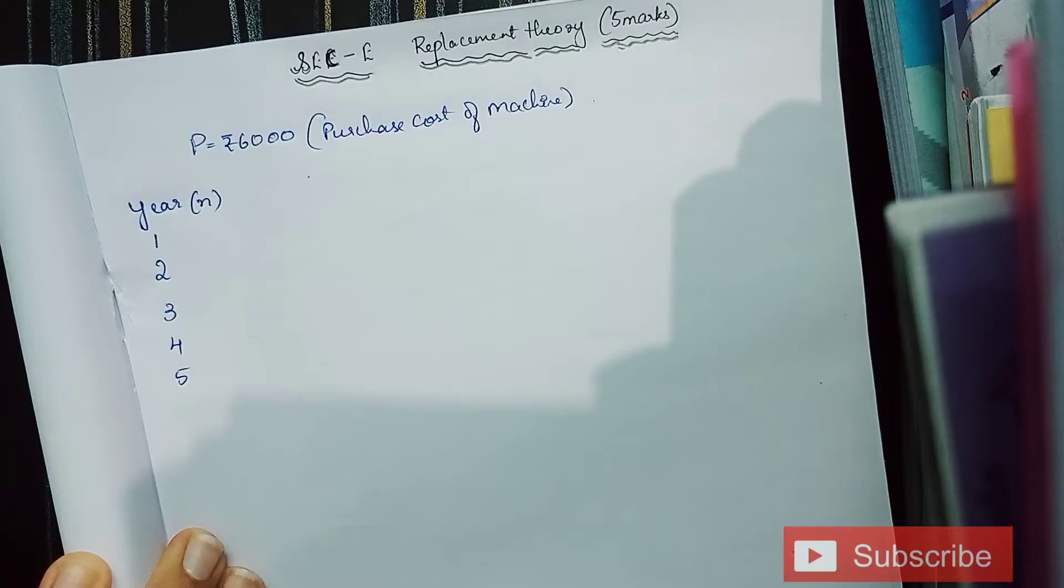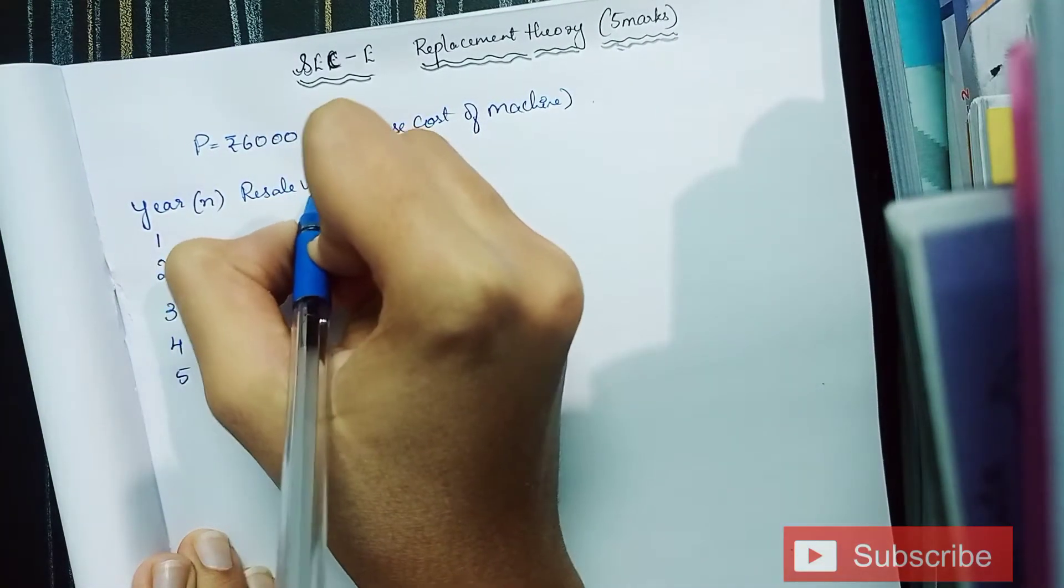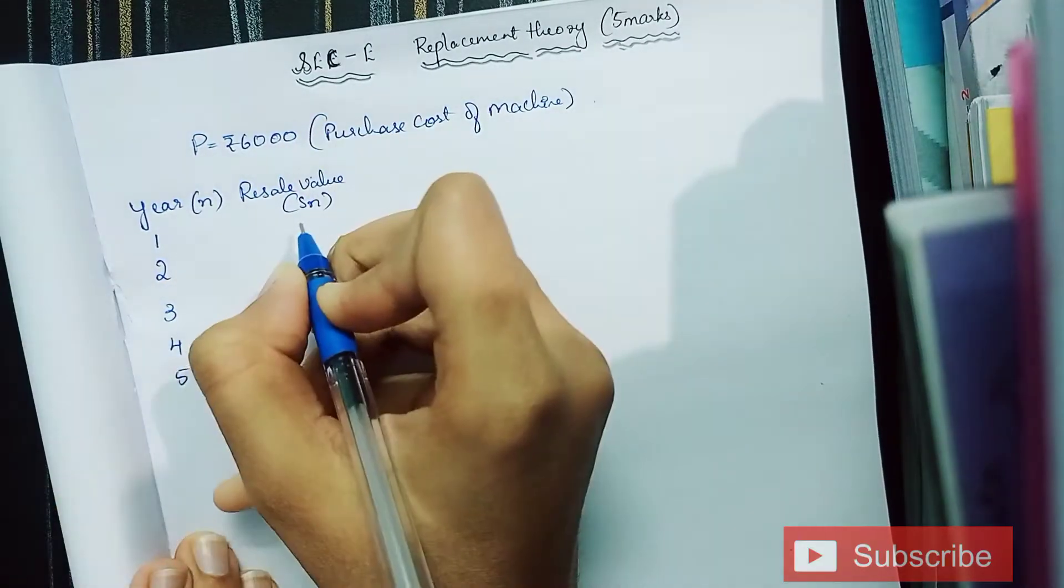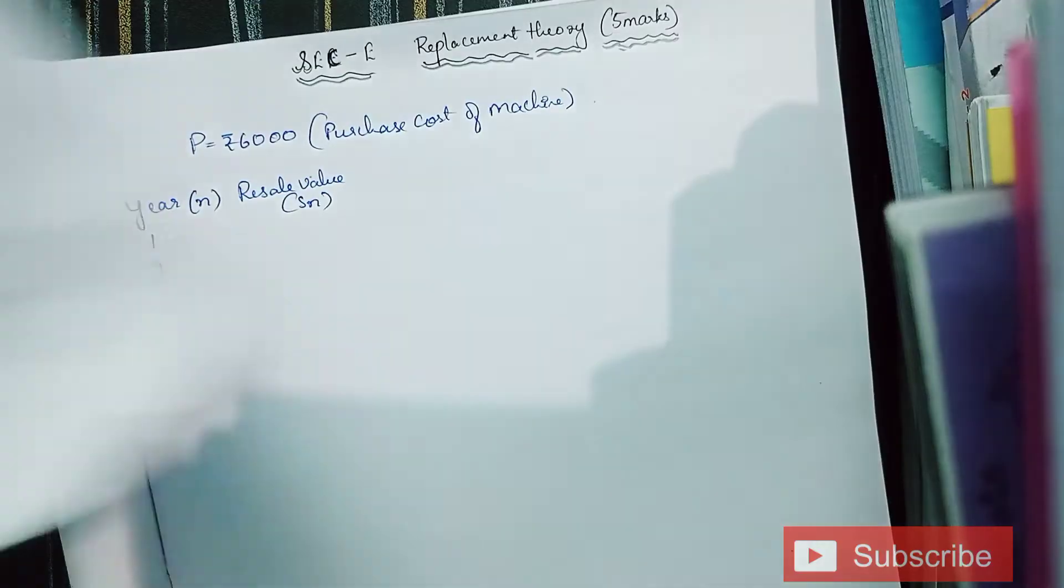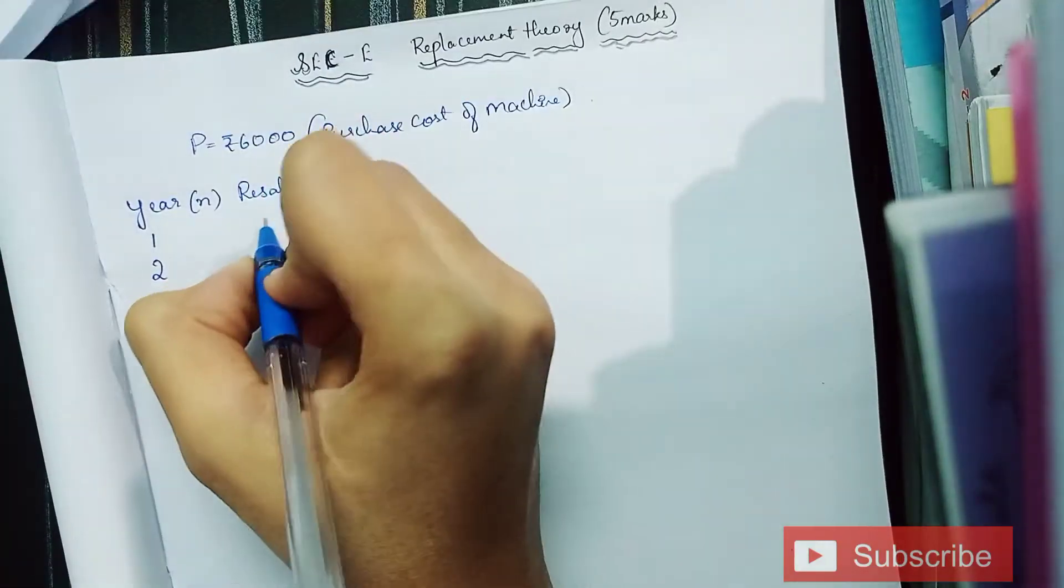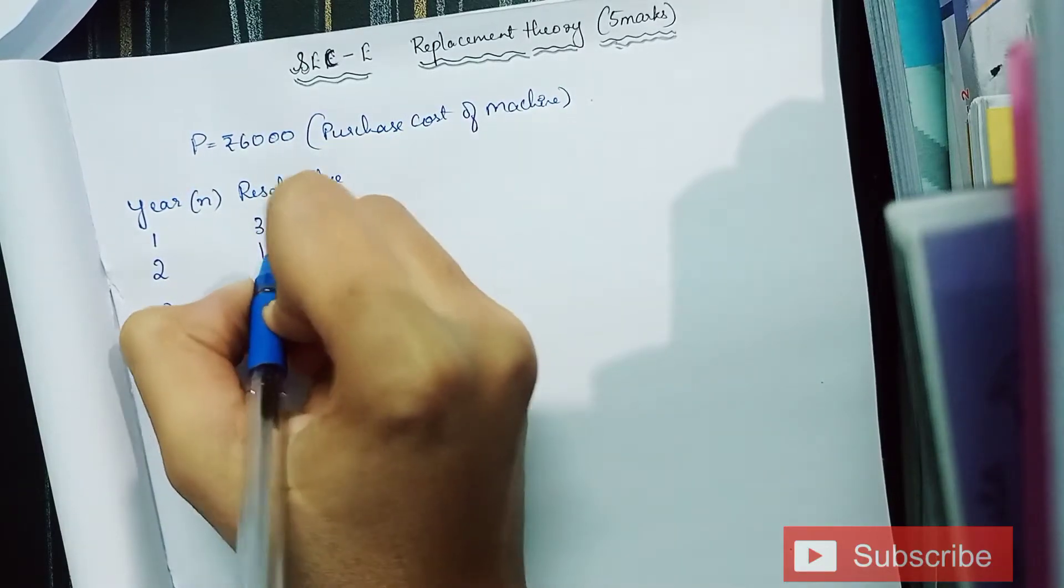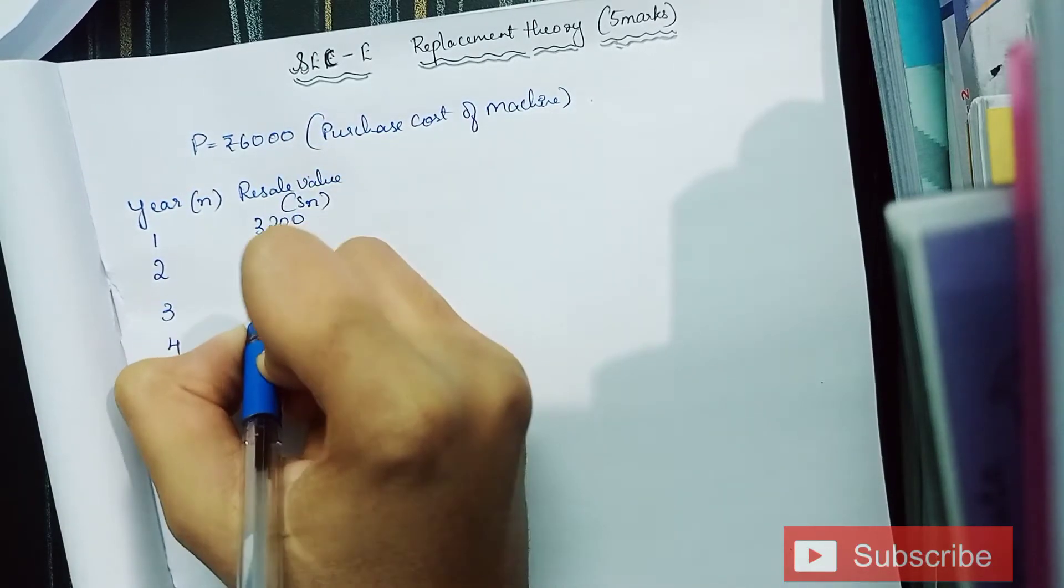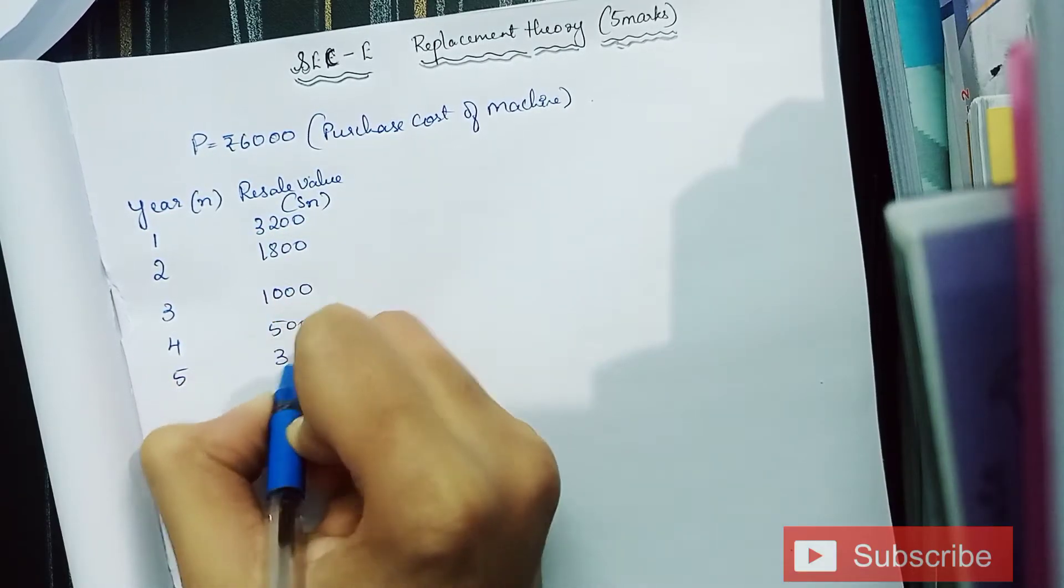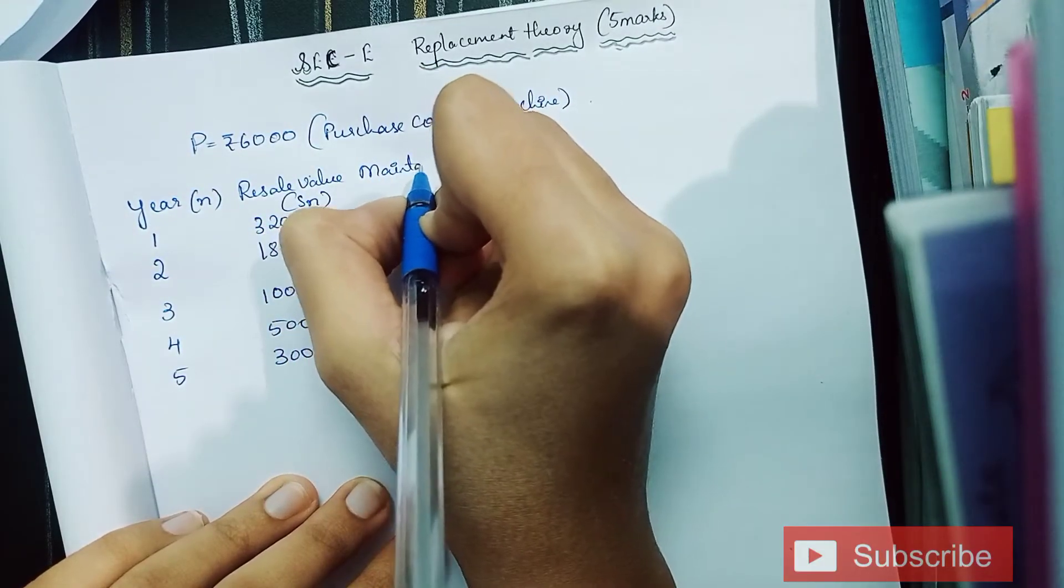Next is the resale value. Make sure you denote it by SN. Now all these values must be recorded respective to the years: 3200, 1800, 1500, 500, and 300.